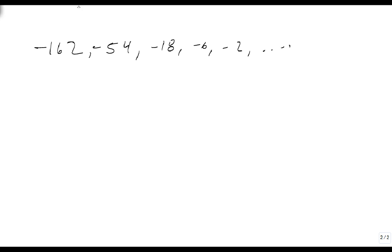Now the easiest ones here, it looks like to me, because you can pick any of them, would be these two. So I'm going to take r as a5 divided by a4, which is minus 2 divided by minus 6, which is 2 over 6, which is 1/3.